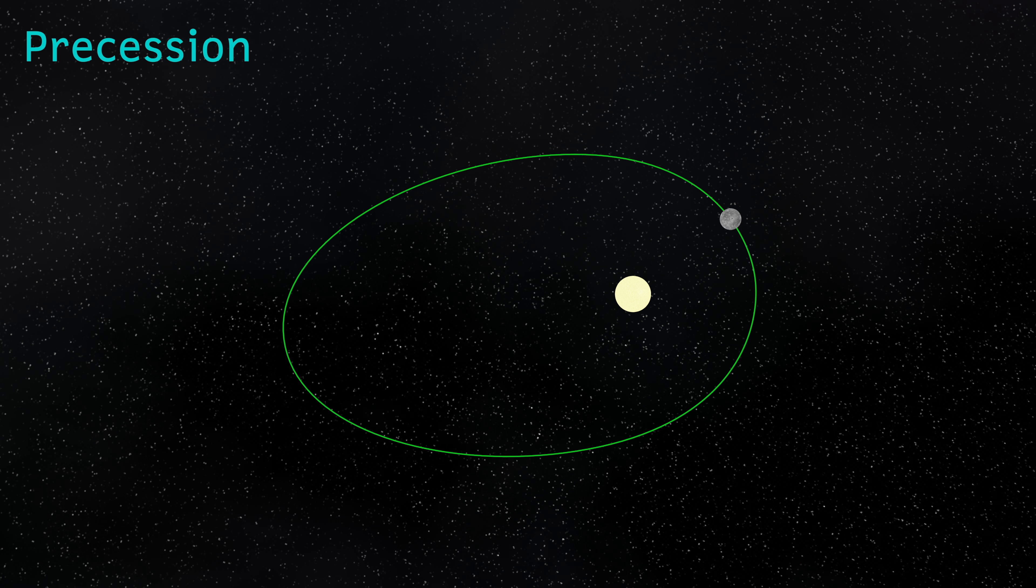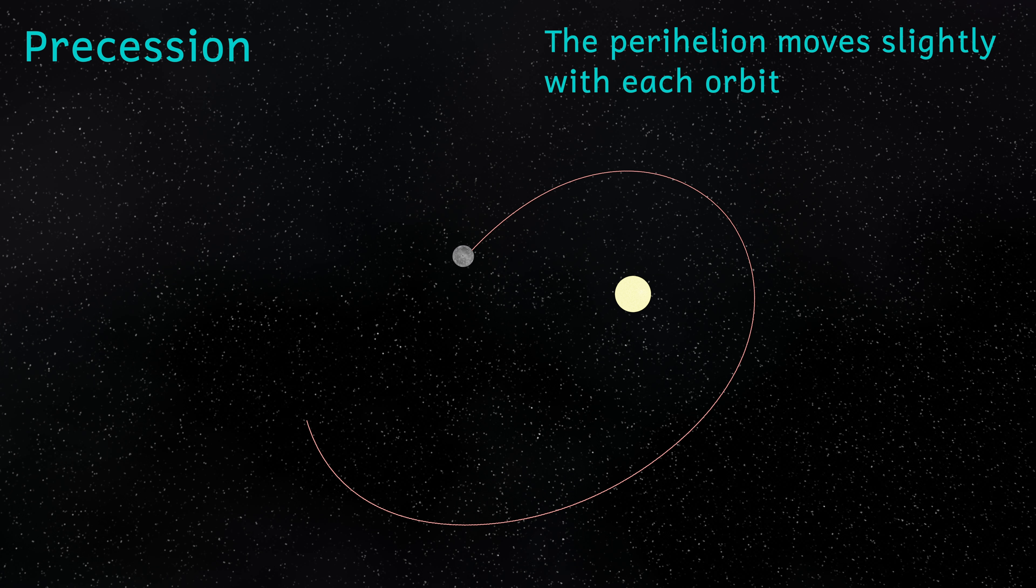Precession is the change to the elliptical orbits that happens as the planets orbit the Sun. Each orbit follows a slightly different path to the previous one. The perihelion of each orbit is moved slightly from the previous, and this happens as the elliptical orbits rotate slowly, as they've shown here again in an exaggerated way.